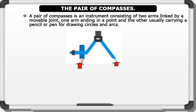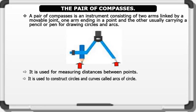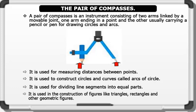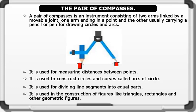The uses of a pair of compasses include: 1. It is used for measuring distances between points. 2. It is used to construct circles and curves. 3. It is used for dividing line segments into equal parts. 4. It is used in the construction of figures like triangles, rectangles, and other geometric figures.